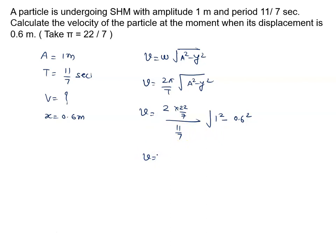We calculate it with the help of the calculator, it will be easy for us. 2 into 7 cancel ho gaya, 11 se 11 to 2-4. To ye aage hai 4 root 1 square minus 0.36.